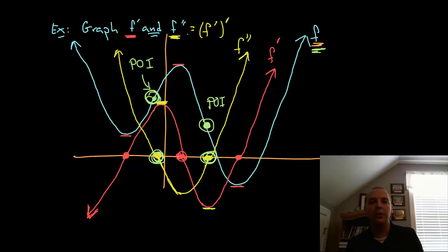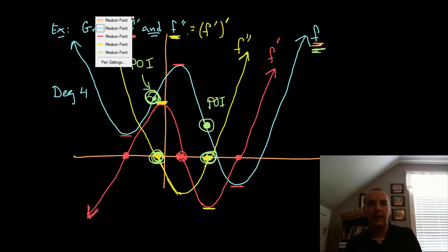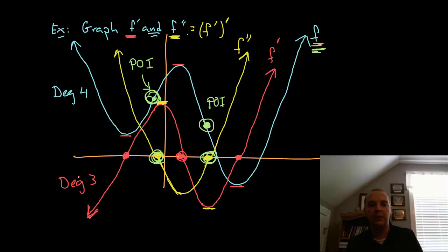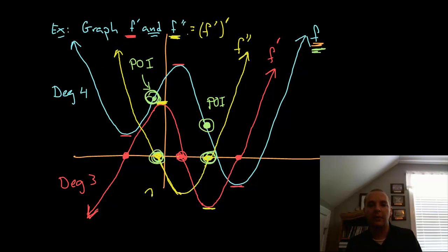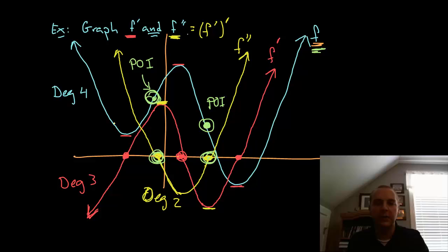Now what about degrees? The original looks like probably a degree four polynomial — it goes down, up, down, up. The first derivative looks like a cubic equation — degree three, up, down, up. And how about the yellow graph? It looks like a quadratic of degree two. So all these things fit together, and it looks like this is correct.